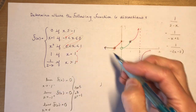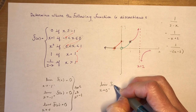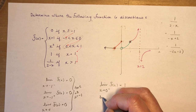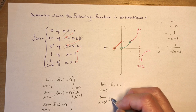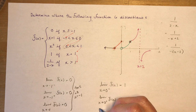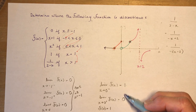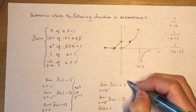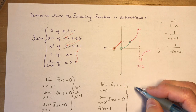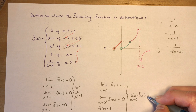At x equals 0: the limit from the left of f(x) is 1, but the limit from the right is 0, and f(0) equals 1. Since the limit from the left does not equal the limit from the right, the limit as x approaches 0 does not exist. This is discontinuous at x equals 0 — it is a jump discontinuity, as you can see on the graph.